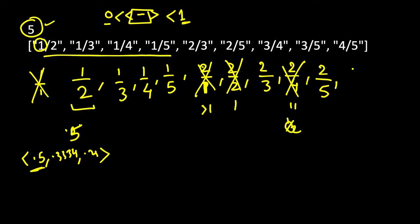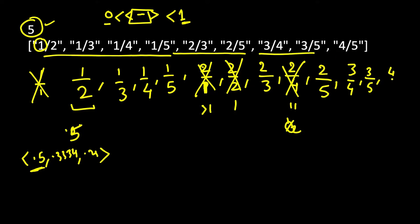Moving to numerator 3: 3/1, 3/2, and 3/3 are all not possible. So the first valid fraction is 3/4, then 3/5. Then for numerator 4, the only valid fraction is 4/5.